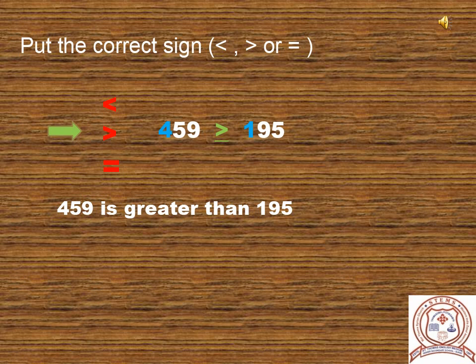Now let us practice what we learned by taking more examples. Fill in the blanks with the sign greater than, less than, or equal to. First question: compare 459 and 195. Start comparing the leftmost digit, which is the hundreds place. 4 is at hundreds place in 459 and 1 is at hundreds place in 195. 400 is greater than 100. That means 459 is greater than 195.